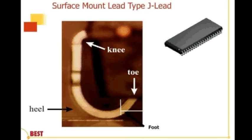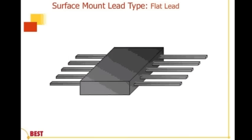There are also J-leaded components. Unlike the gullwing-leaded component — whose foot goes away from the package — the J-leaded component curls up underneath the package body. It too has a knee, a heel, a toe, and a foot. We describe the solder and the solder formation in terms of those components on the J-leaded component.